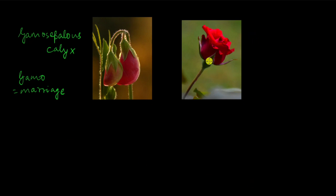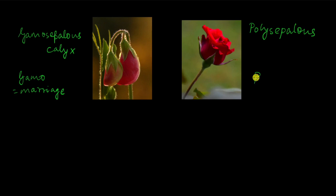The opposite of gamosepalous is polysepalous, in which, like in rose, the sepals are completely separate — they are not joined together at all. So the term for that is polysepalous. 'Poly' as you know means many, and there are many sepals which are separate, that's why we call them polysepalous.